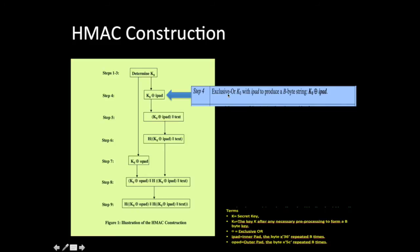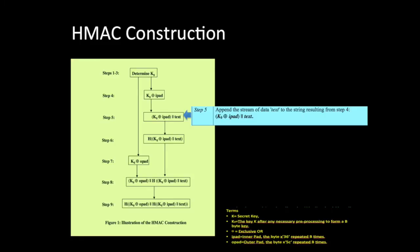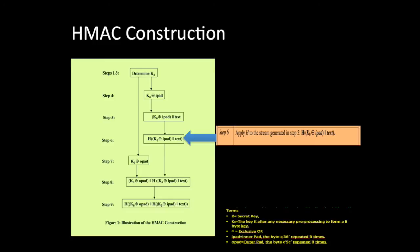In step four, we exclusive-OR K0 with ipad to produce a b-byte string. ipad is the inner pad byte 0x36 repeated b times. In step five, we append the stream of data text — the message — to the string resulting from step four. Once we do that, we apply the hash function H to the result from step five.